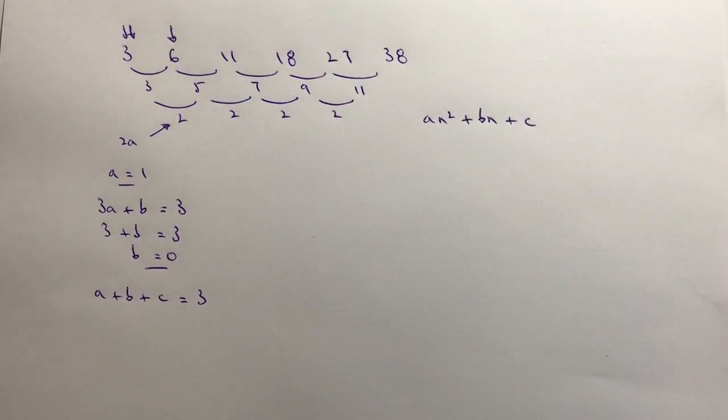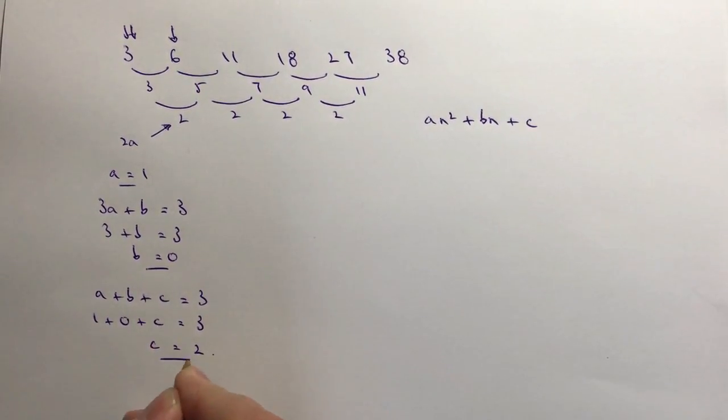So again I've got my value of a and b, I'm going to plug that straight in. So a is 1, b is 0, c I don't know but that equals 3. So 1 plus 0 is 1 plus c is 3, so 1 plus c is 3, so therefore c must equal 2.